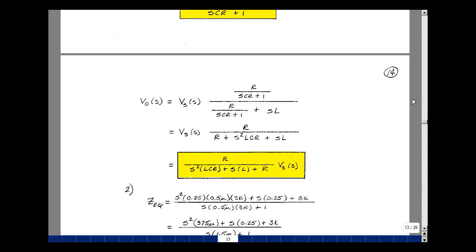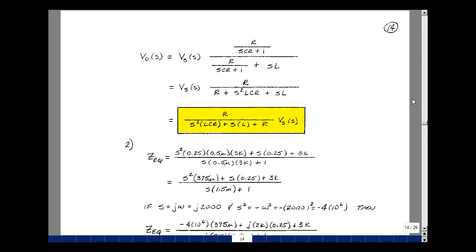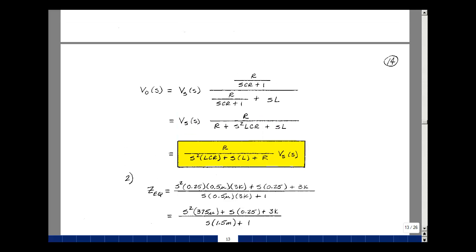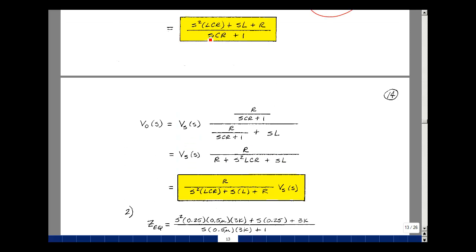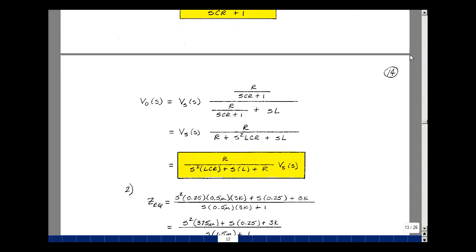Our second task was to evaluate these results with a 250 millihenry inductor, 0.5 microfarad capacitor, and a 3k resistor. So here's LCR, here's our L, C, and R. We have L which is 0.25, resistor of 3k. And S times CR, which is 0.5 micro times 3k plus 1. That would be the value of our Z equivalent with the component values.